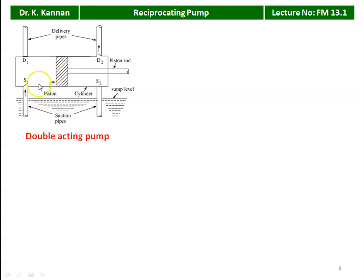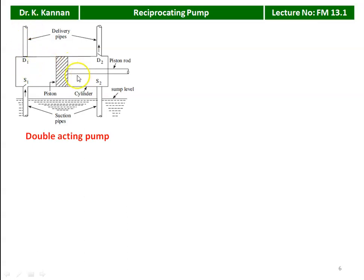When the piston moves from left to right, water on the right side is compressed, the delivery valve opens and water is delivered. Simultaneously, on the left side, vacuum is created, the suction valve opens and water is admitted into the cylinder. When the piston moves from right to left, water on the left side is compressed, pressure increases, suction valve S1 closes and D1 opens — water is delivered. At the same time on the right side, vacuum is created, the suction valve opens and liquid is drawn in. So there is continuous delivery of water in the case of the double acting pump.